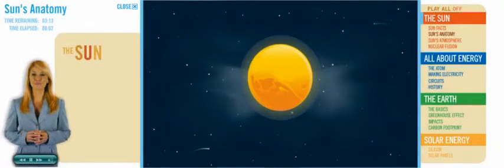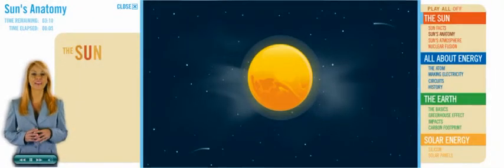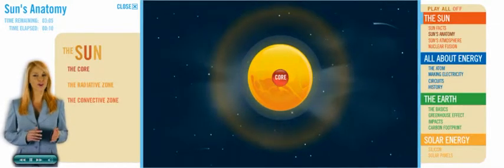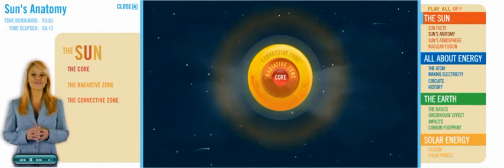Each part of the Sun plays a special role in how it creates light and heat. There are three main parts of the Sun: the core, the radiative zone and the convective zone.